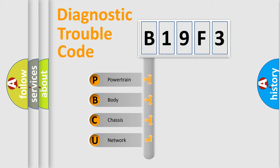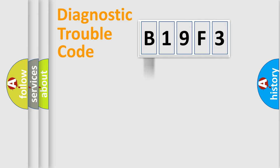We divide the electric system of automobile into the four basic units: Powertrain, Body, Chassis, and Network. This distribution is defined in the first character code.